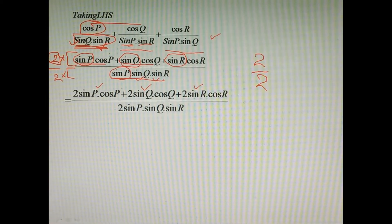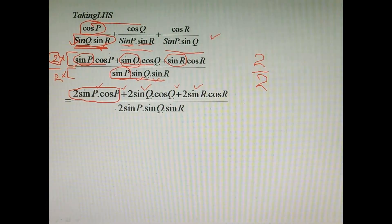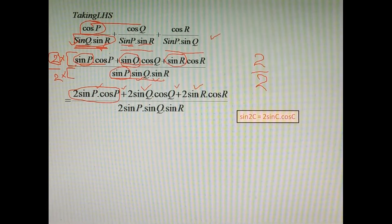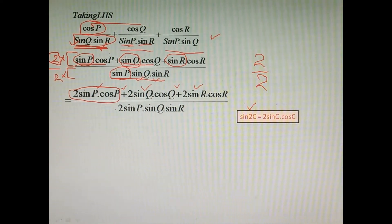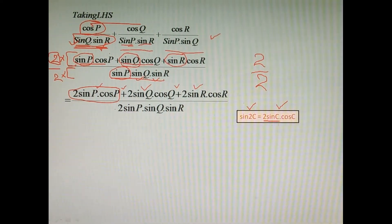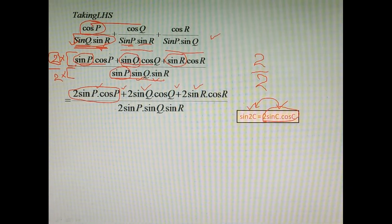And moving to the next slide, now we can convert this form into a formula. That is, sine 2C is equal to 2 sine C into cos C. So we have numerator in the form of 2 sine C into cos C. This can be converted in the form sin 2C from this formula.